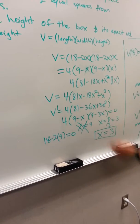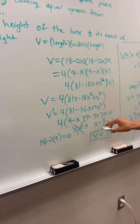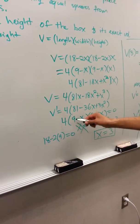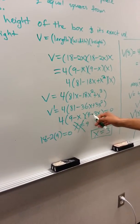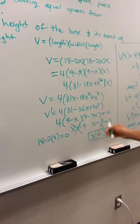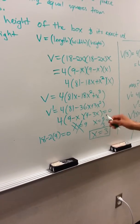We can further factor this down if we get a common factor going. We have 4 times (9-x) times (9-3x), and if you foil this out you'll get back to the same thing.